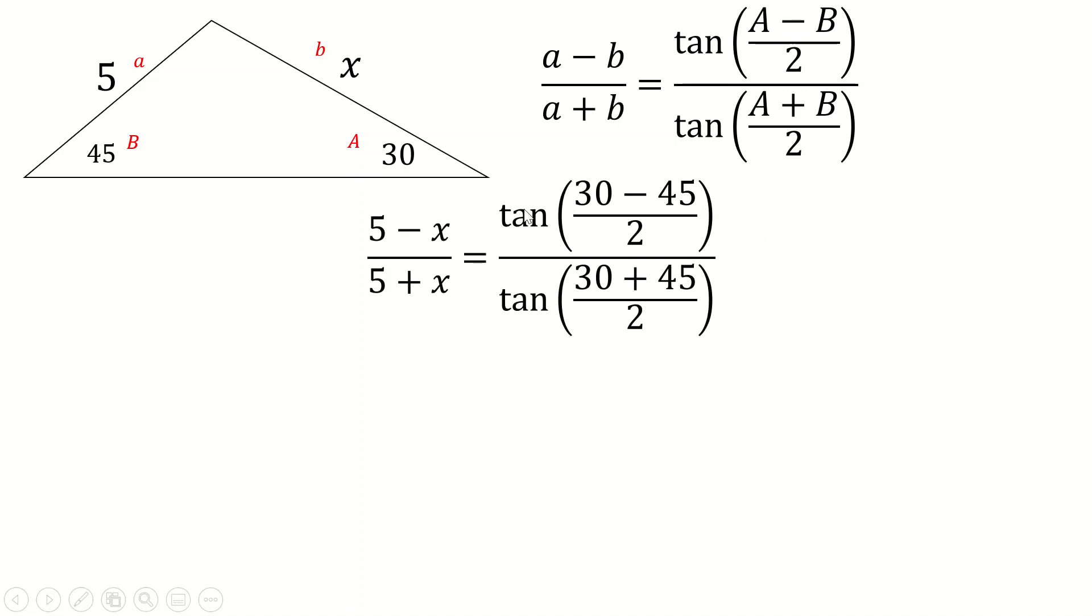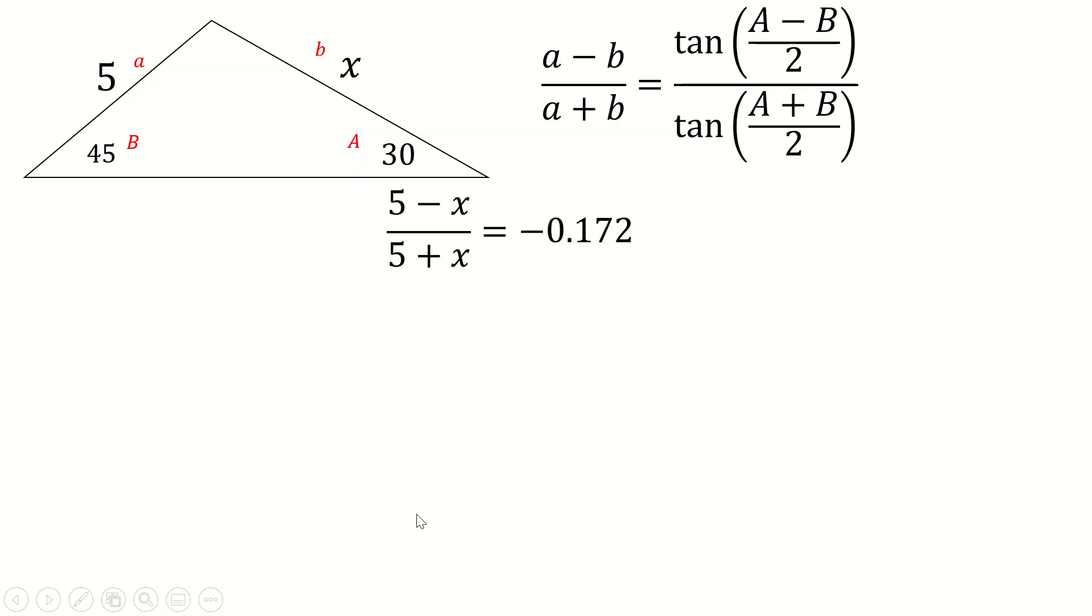And we end up with this thing here. Now the nice thing about this is that this is all number. So you can literally just type this entire thing into a calculator, and you get this. And that's okay, because now I can just bring this five plus x over to the other side, just multiply both sides by that, expand out these brackets. I'm going to add this to both sides to give me 5.858, going to add one x to both sides to give me 0.828. And now just divide by 0.828. And you get x is 7.07.